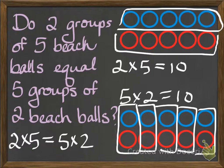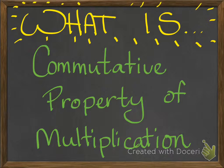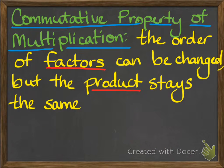This looks very similar to a property we've already learned about in addition called the commutative property. The commutative property of multiplication is: the order of factors can be changed, but the product stays the same. This is really important, so this is something you should be writing down. I would pause the video to write out what the commutative property of multiplication is. Today we're going to be learning about four different properties, and you'll need to know the difference between all four, be able to identify them, and be able to explain what they mean.